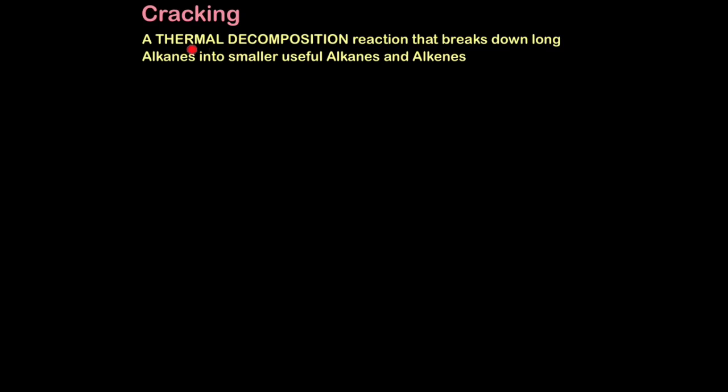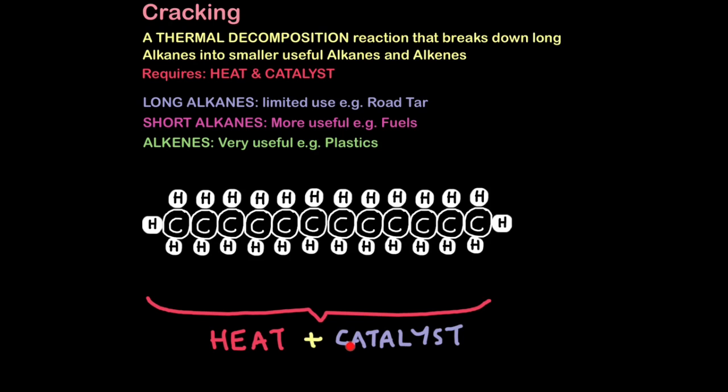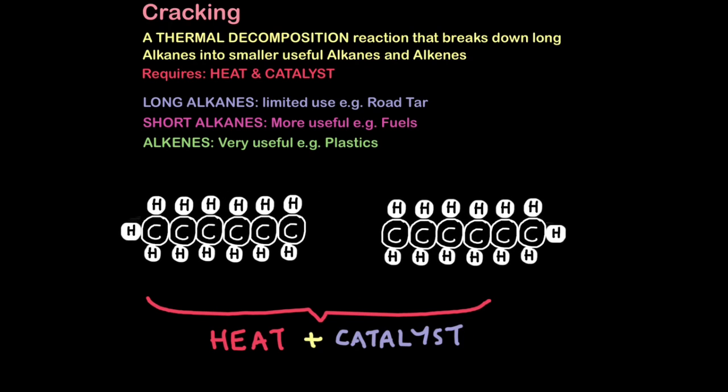Now let's look at the process of cracking, which essentially sounds like what it is. Cracking is a thermal decomposition reaction. That means when you break something down using heat, that breaks down long-chain alkanes into smaller, useful alkanes and alkenes. Cracking requires heat and a catalyst. A catalyst is anything you add to a reaction which speeds it up, but the catalyst itself will not be used up in the reaction. Long alkanes have limited use, like road tar. Short alkanes are more useful, like petrol fuels. And alkenes are very useful because we use them to make plastics.